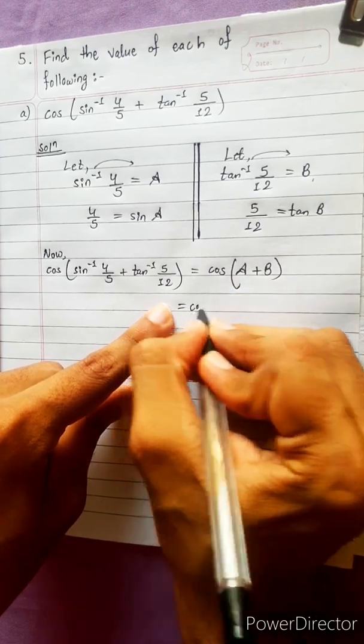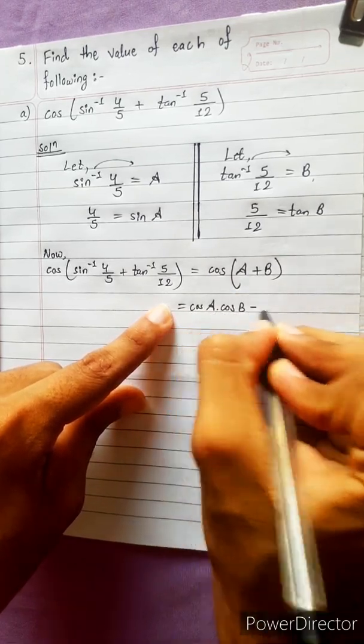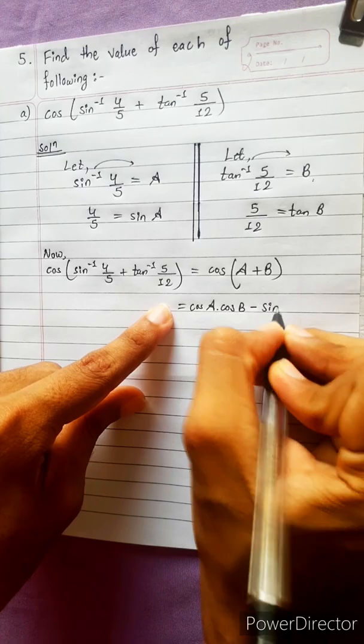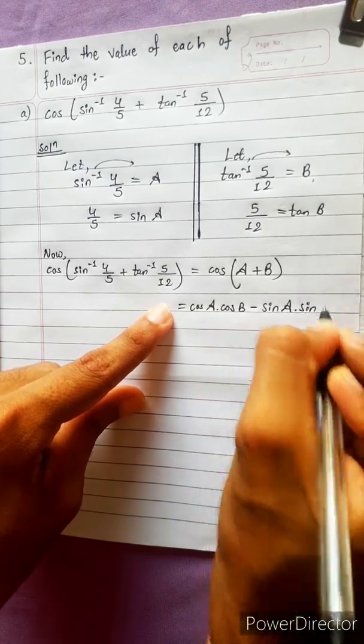Now, the formula for cos(A + B) is: cos A · cos B minus sin A · sin B.